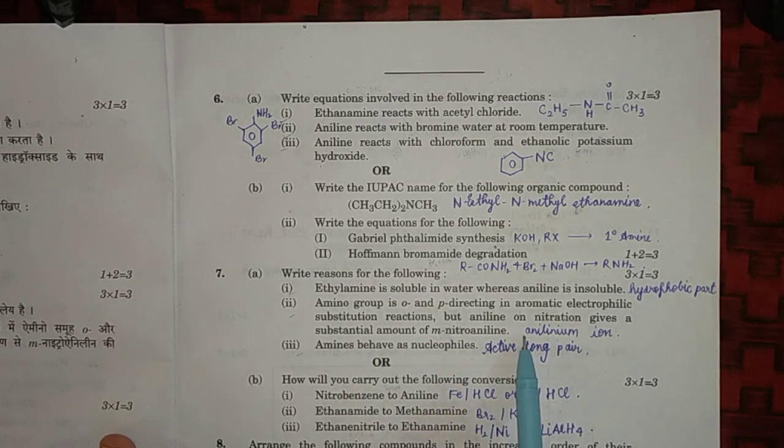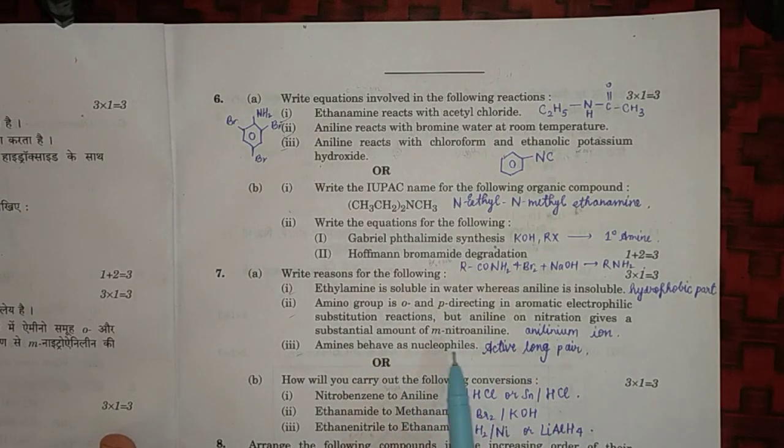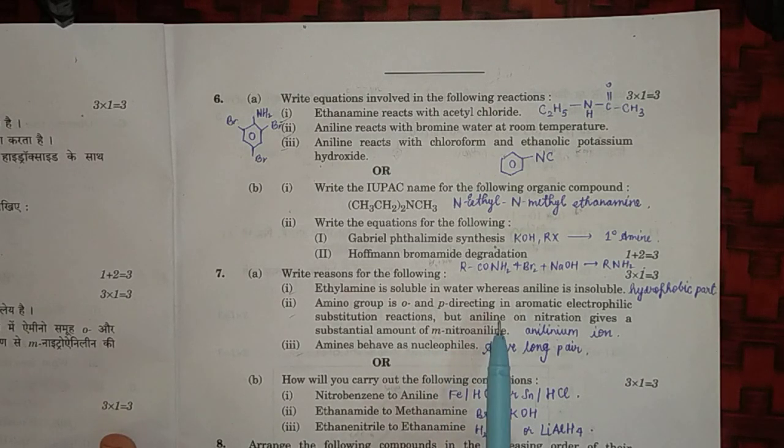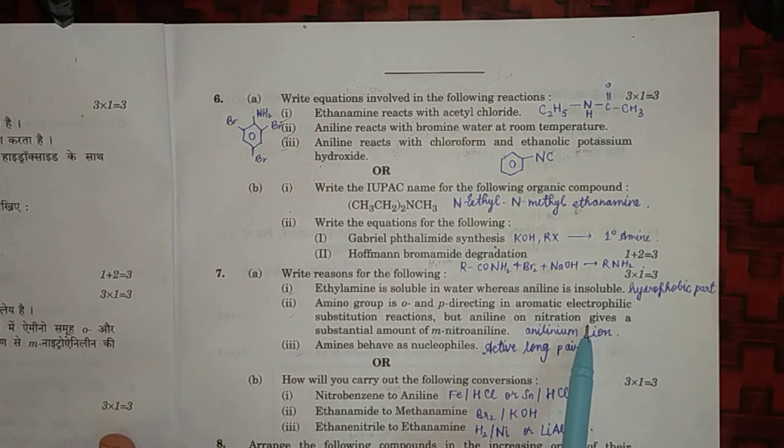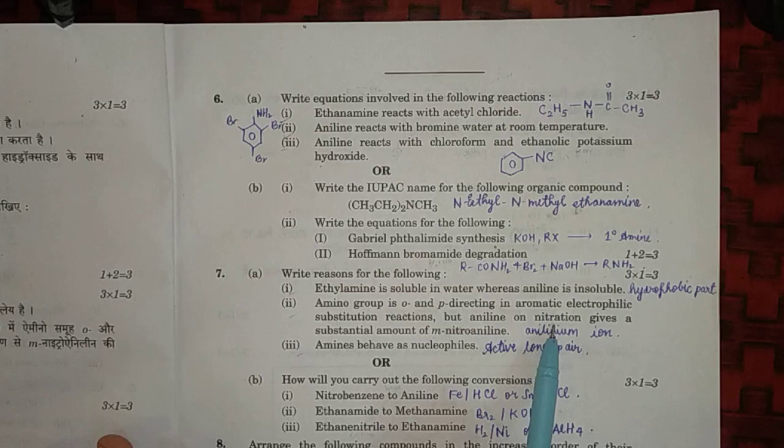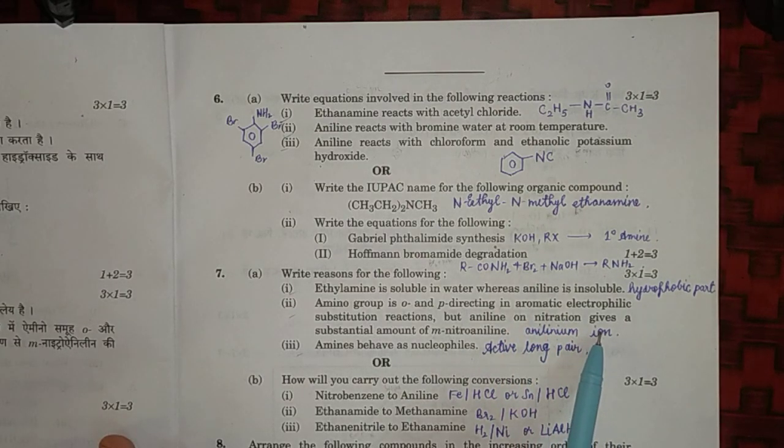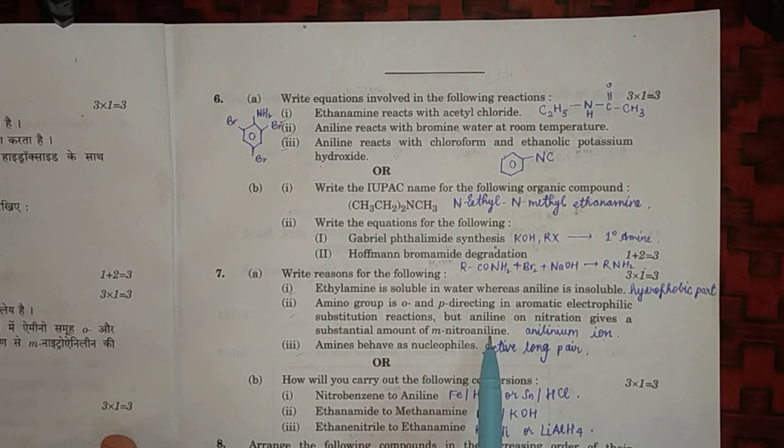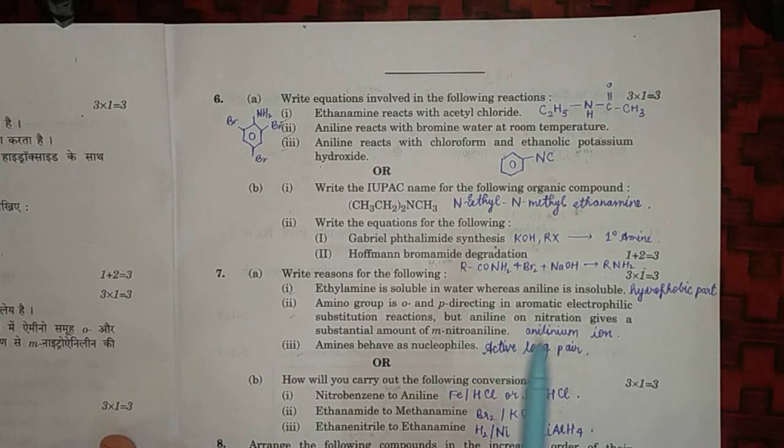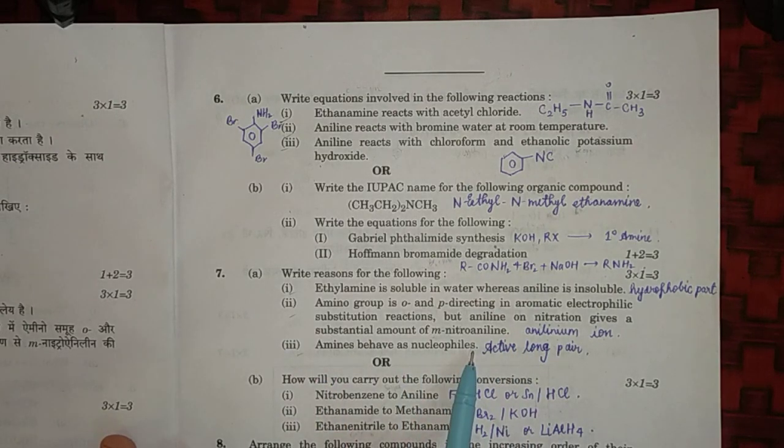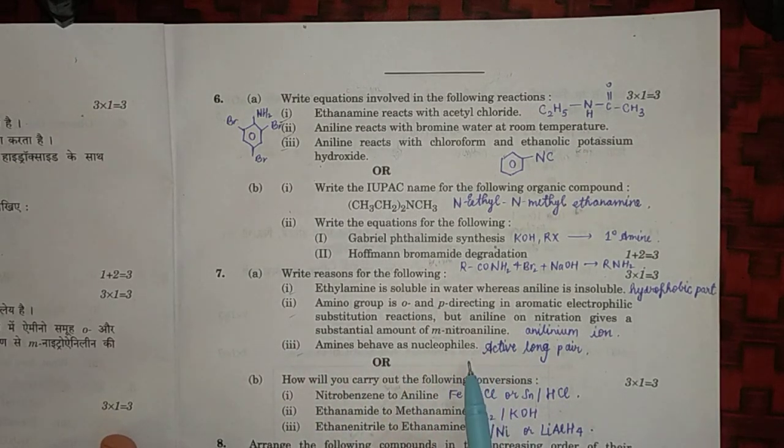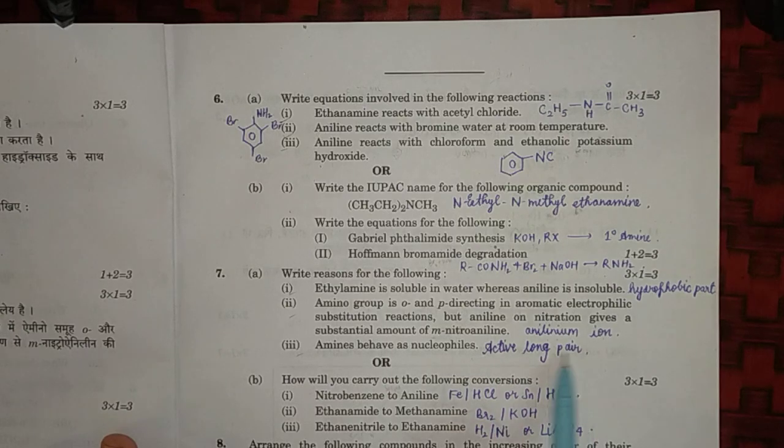Second is: amino group is ortho and para directing in aromatic electrophilic substitution reaction, but aniline on nitration gives a substantial amount of M-nitroaniline. This is because aniline on nitration in acidic medium gets protonated to form anilinium ion, and anilinium ion is meta-directing and a deactivating group, so a large number of M-nitroaniline is formed. Amines behave as nucleophile because they have active lone pair attached to them.